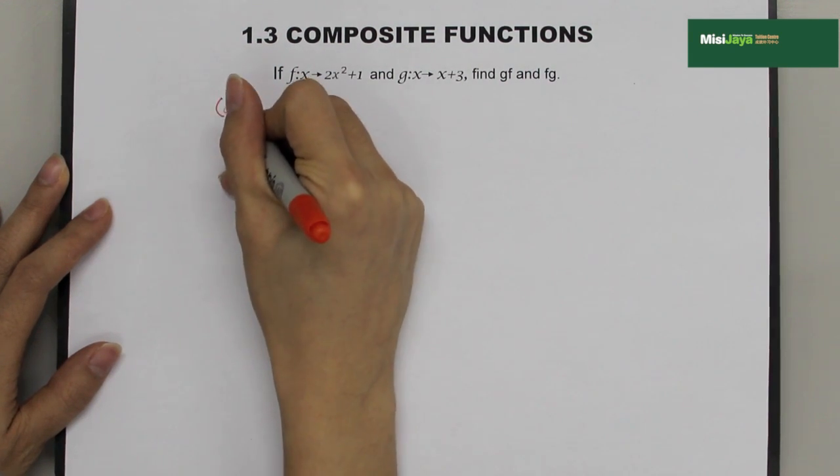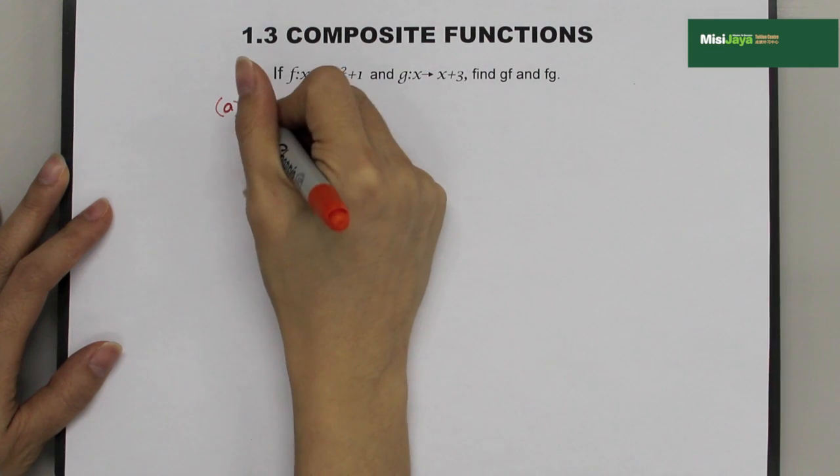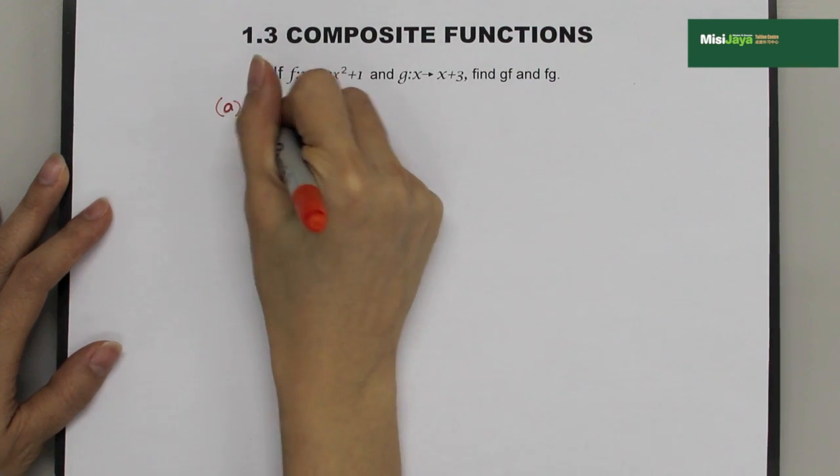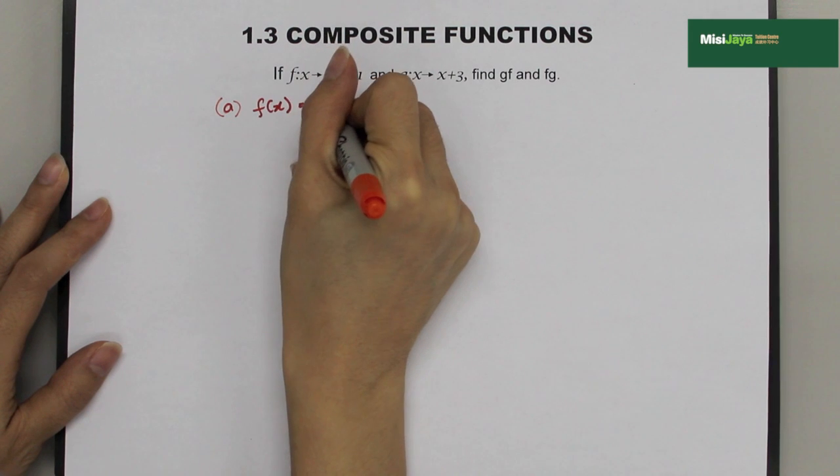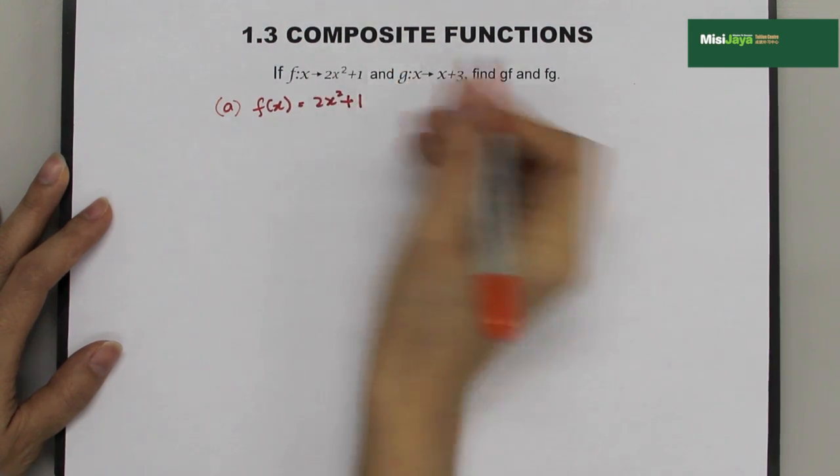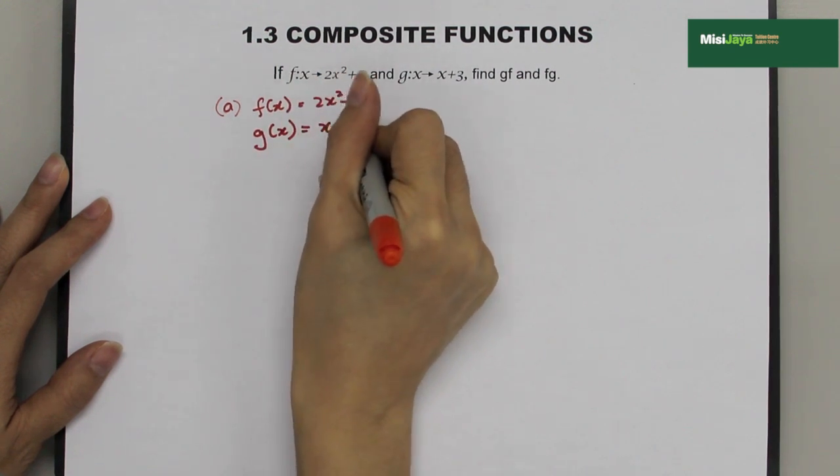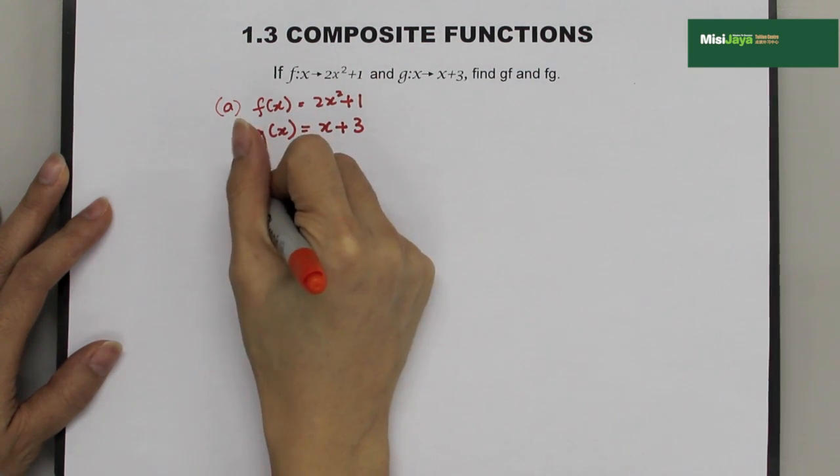Part a for gf. So, we write back the same, the question. f(x) = 2x² + 1 and g(x) = x + 3. So, find gf(x).